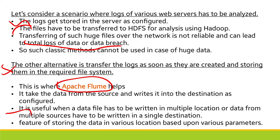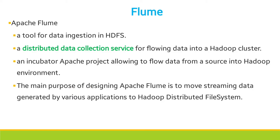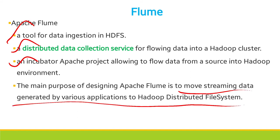Apache Flume is a tool for data injection into HDFS — a distributed data collection service and an incubator Apache project. The main purpose of designing Apache Flume is to move streaming data generated by various applications to HDFS. Data from multiple sources will be transferred through Flume, which supports storing data in various locations based on various parameters.